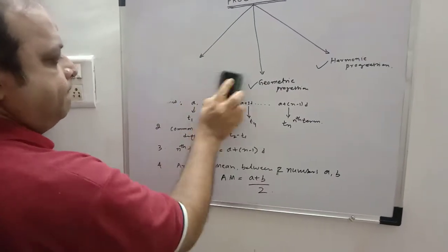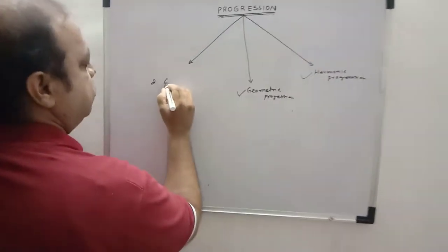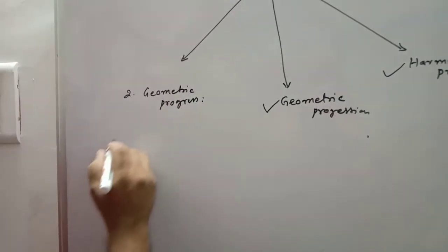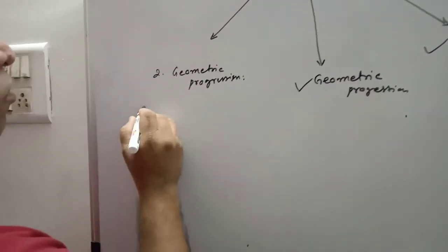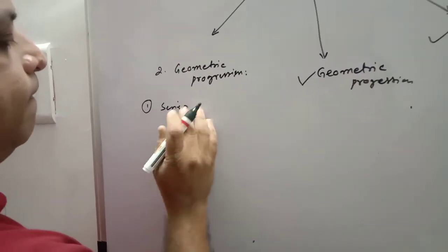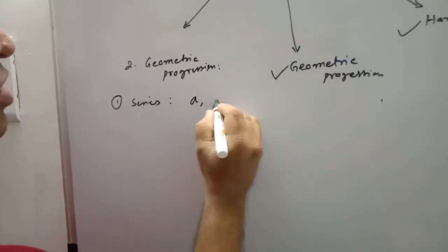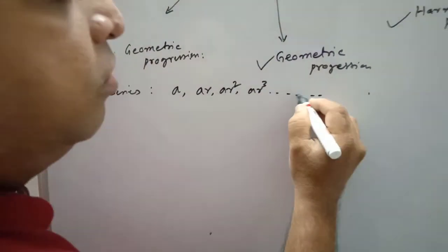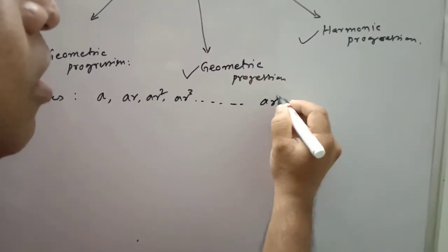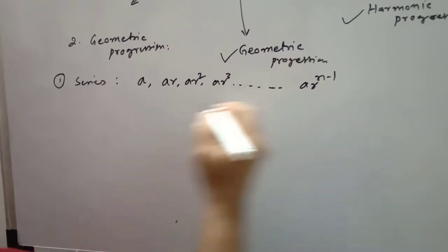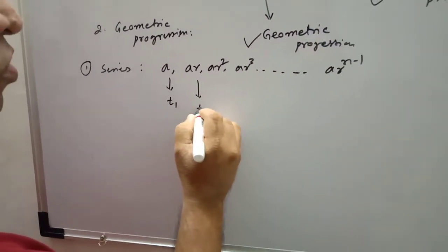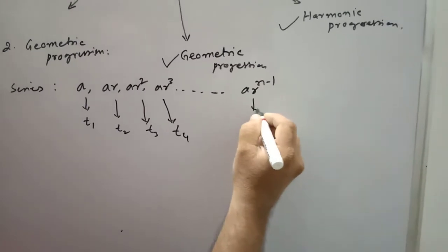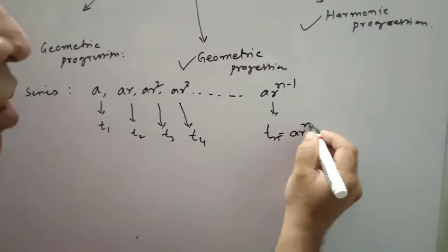Now I am talking about geometric progression. Number one is series — geometric series. How it is recognized: a, ar, ar squared, ar cubed, and so on. So the nth term is ar to the power n minus 1. This is called term 2, term 3, term 4, and this is the nth term. Tn is equal to ar to the power n minus 1.